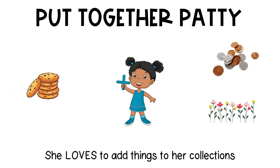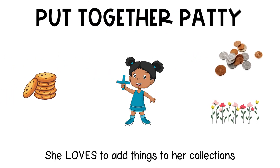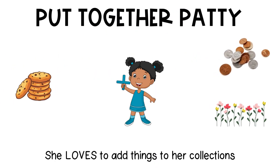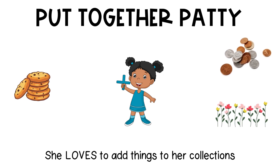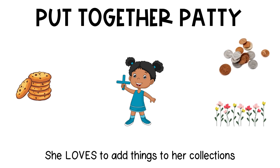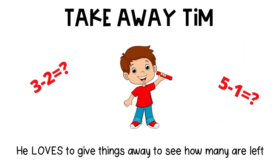Before we begin, let me introduce you to two of my friends. This is Put Together Patty. She loves getting more things to add to her collections. Patty will help us today when we are adding. This is my friend Takeaway Tim. He loves to give things away to see how many are left. Tim will help us remember when we need to subtract.